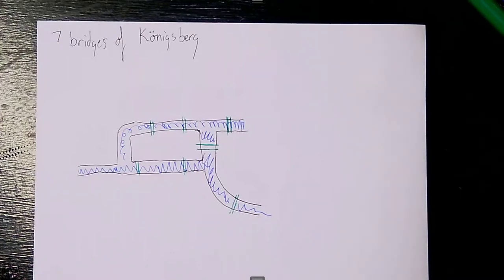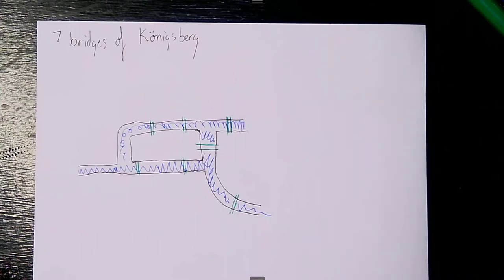Hey everyone, welcome back. Today we're going to talk about the seven bridges of Königsberg problem, which is super cool. We're getting back into graph theory, which I think I've talked about a lot. It's my favorite subject. I love it so much. I hope this is a good video for you all.